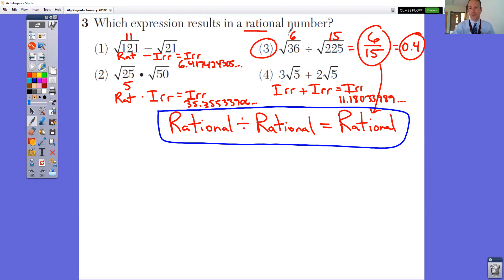So in number 3, we have the square root of 36, which is 6, that's a rational number, divided by the square root of 15. 6 divided by 15 gives you an answer of 0.4. 0.4 is a rational number.